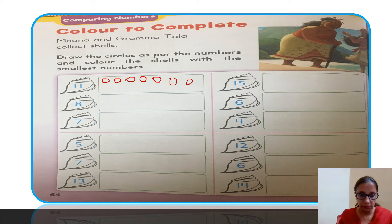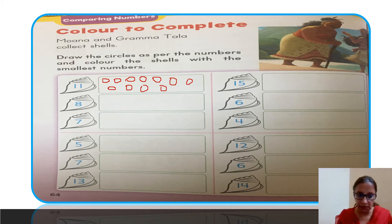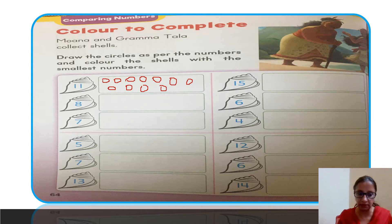...eight, nine, ten, and eleven circles. Similarly, for all shells, draw as many circles as the number written on that shell. This one has eight, so draw eight circles. Here seven — draw seven circles. Five — draw five circles. Seven — draw seven circles. Thirteen — draw thirteen circles.